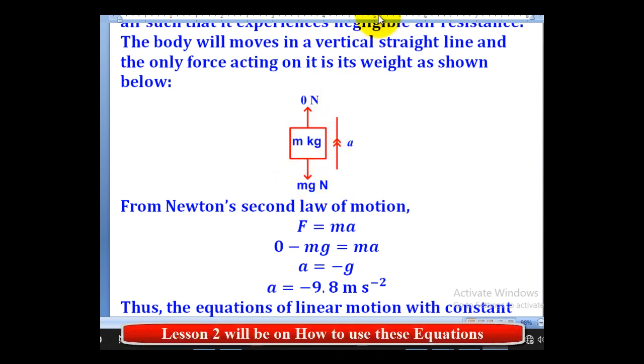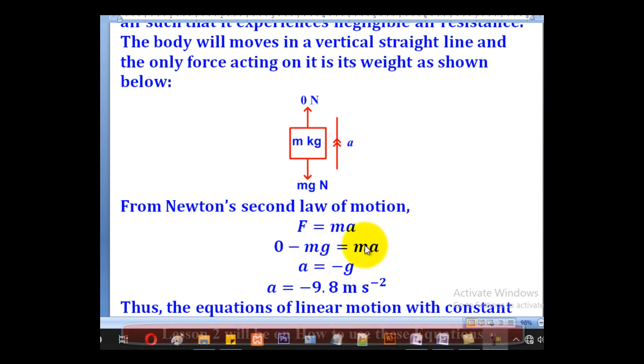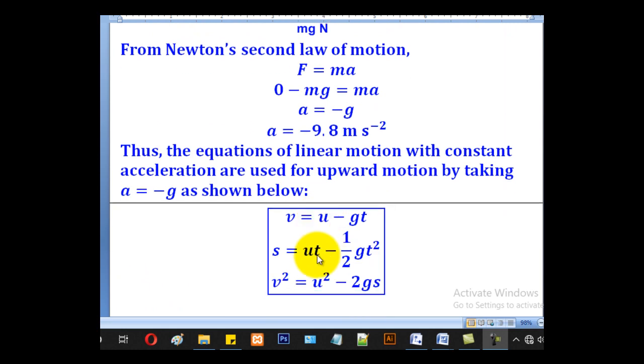The resultant force will be 0 minus mg because it has to be in the direction of motion. So 0 minus mg equals ma. In this case, m can cancel, so we remain with a equal to negative g. But we know that g is 9.8, so a will be equal to negative 9.8 meters per second squared. For vertical motion when the body is thrown upwards, a will be negative g. Note that negative g.